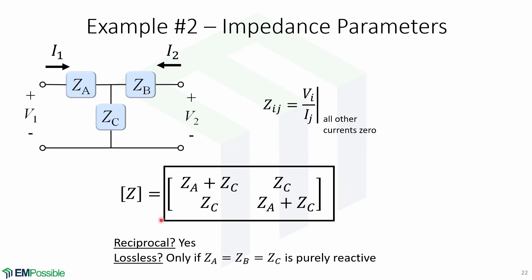Now, is the network reciprocal? Yes, it is. The network is lossless only if ZA, ZB, and ZC are all purely reactive or imaginary.